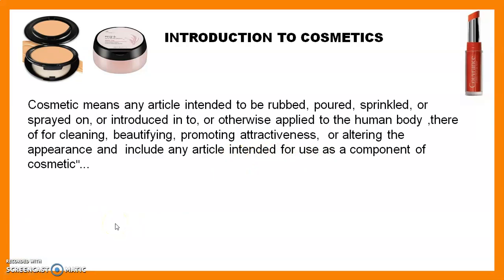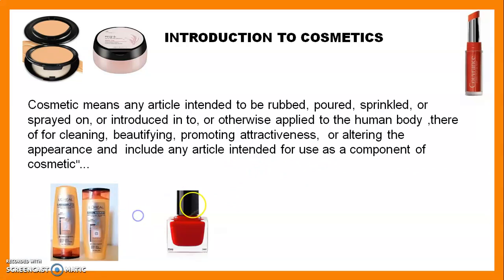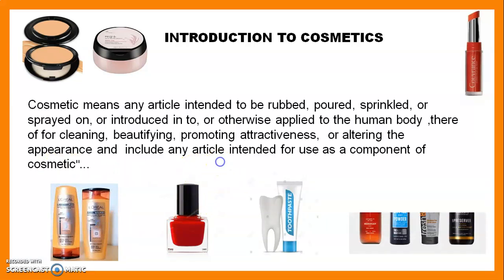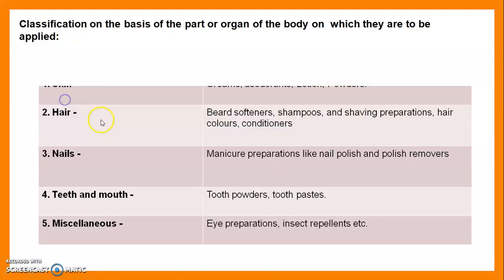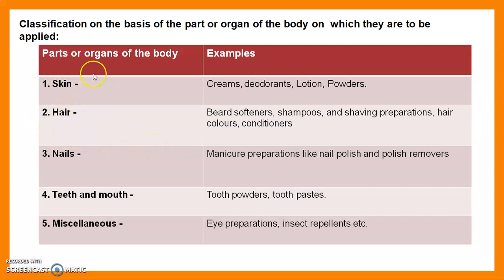Our today's preparation is shampoo, which is one kind of cosmetics. Cosmetics include nail paints, toothpaste, lipsticks, creams, powders, etc. Classified by body part: on the skin we use creams, deodorants, lotions, and powders. For hair: braid softeners, shampoos, shaving preparations, hair colors, and conditioners.